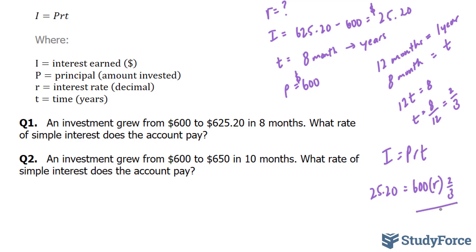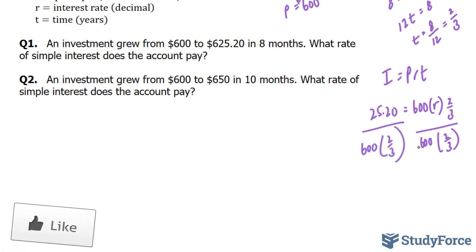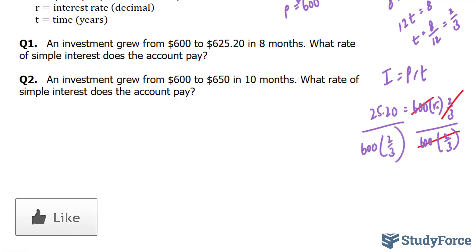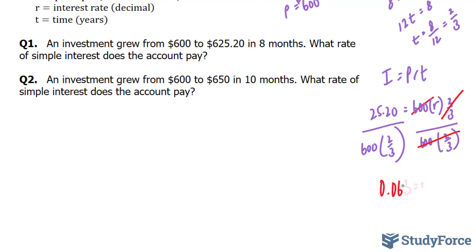I need to solve for r, so I'm going to divide both sides by 600 times 2/3. This will cancel out, leaving me with just r, and I have 25.20 divided by that product. 600 times 2/3 gives me 0.063, which is equal to 6.3%.